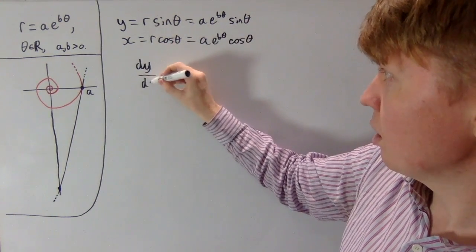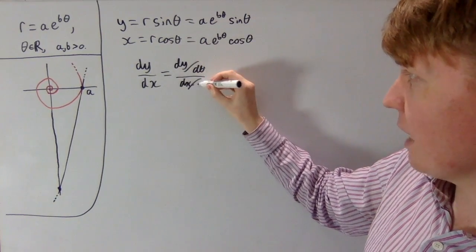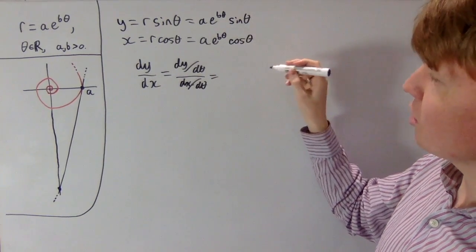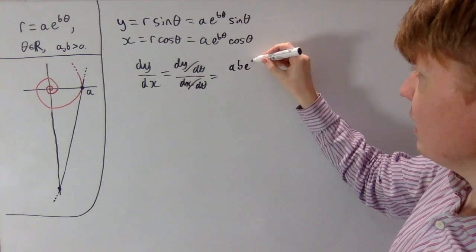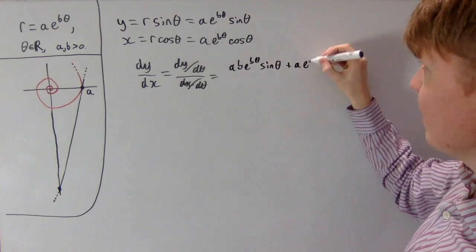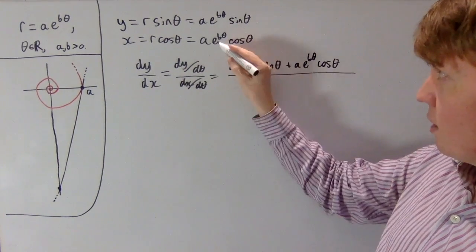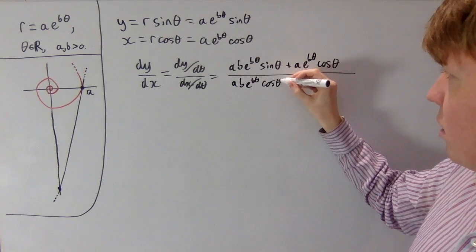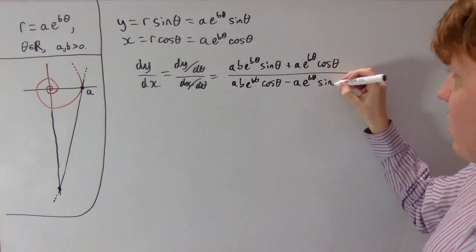Since both x and y are functions of θ, we write dy/dx as (dy/dθ) divided by (dx/dθ). Using the product rule on y: dy/dθ = ab·e^(bθ)·sinθ + a·e^(bθ)·cosθ. For dx/dθ: differentiating gives ab·e^(bθ)·cosθ − a·e^(bθ)·sinθ.